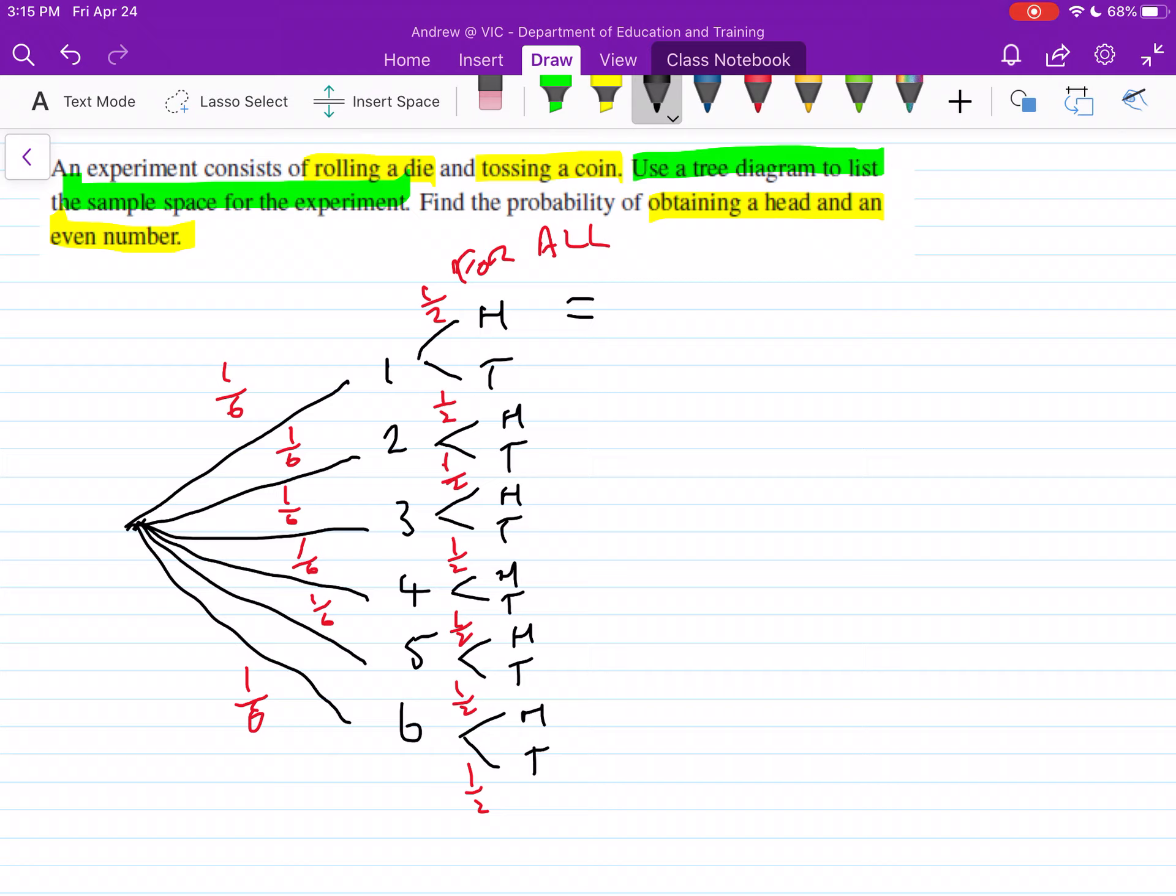So we just need to work out one after the other. So we've got one sixth here and then when something's happening after another, we multiply it. So this becomes one sixth times one half, which is equal to one twelfth. And all of these numbers are the same here, so we can just write one twelfth for each one here.